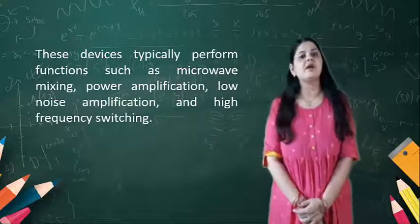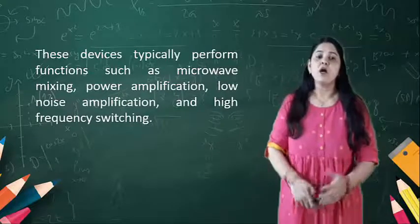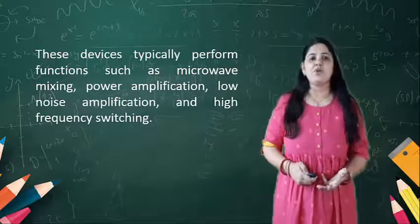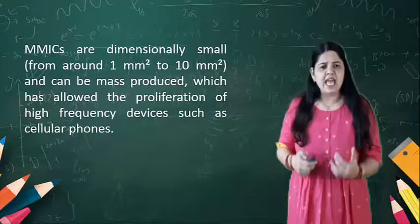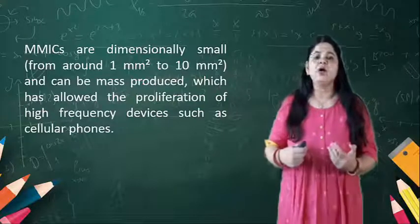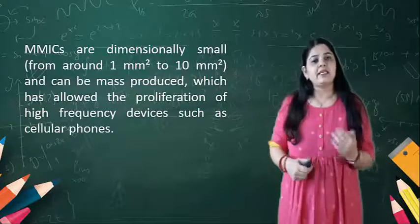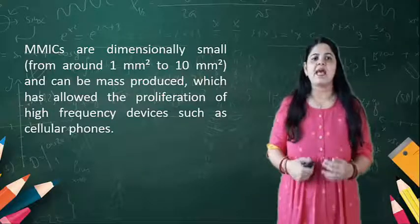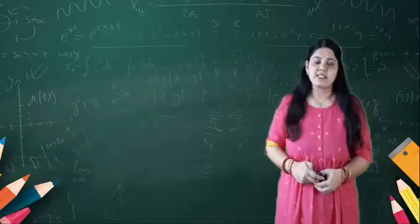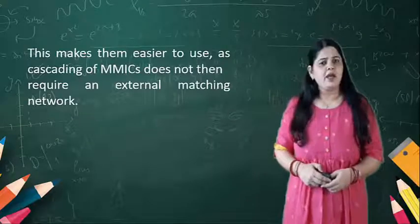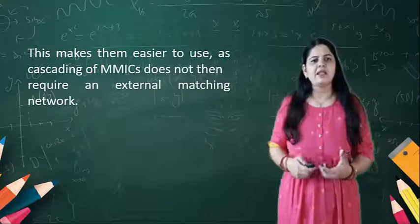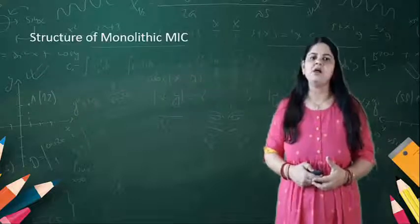Using MMIC, it can perform functions such as micro mixing, power amplification, low noise amplification, and high frequency switching. The MMIC dimensions are around 1 mm² to 10 mm². It can be mass produced and allows the proliferation of high frequency devices such as cellular phones. The use of MMIC is easier and it does not require any external matching network.